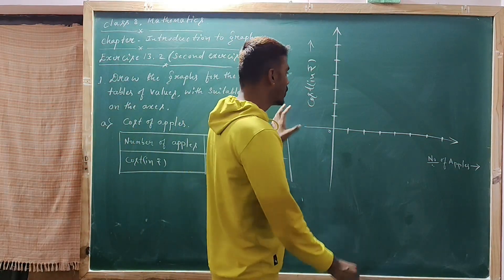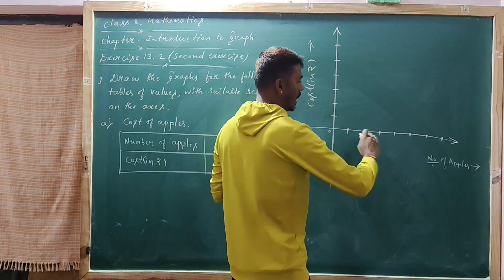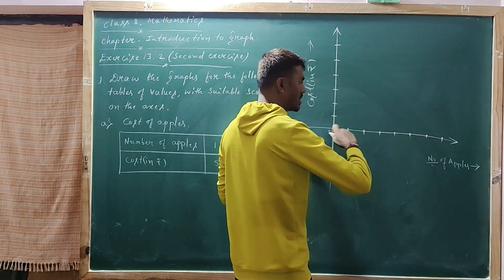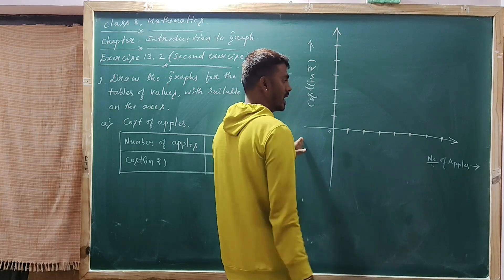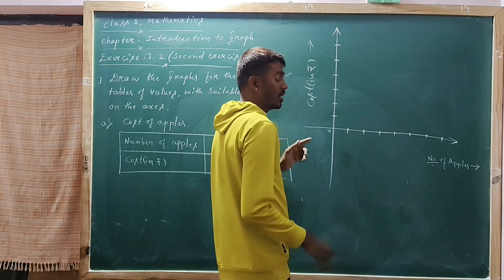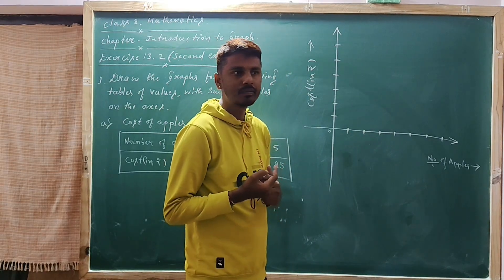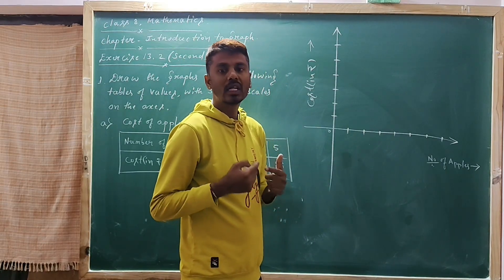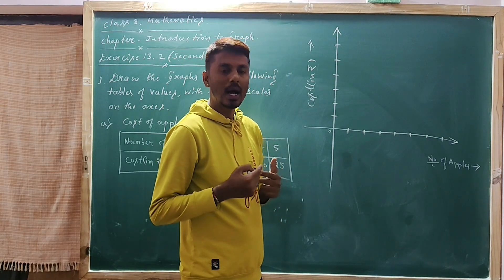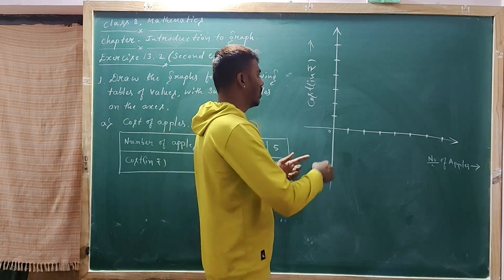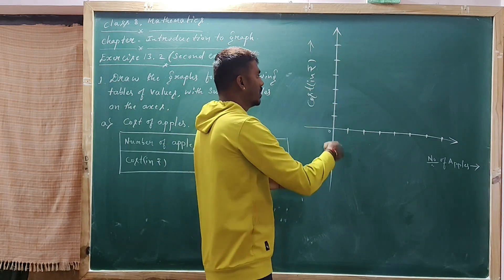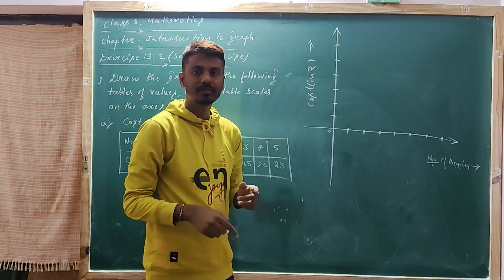Here is one of the graphs. The horizontal axis is known as the x-axis. Another name for the x-axis is abscissa. Another name for the y-axis is ordinate.